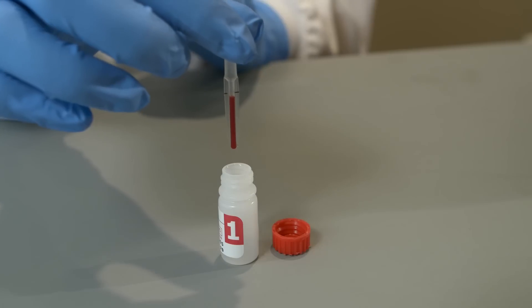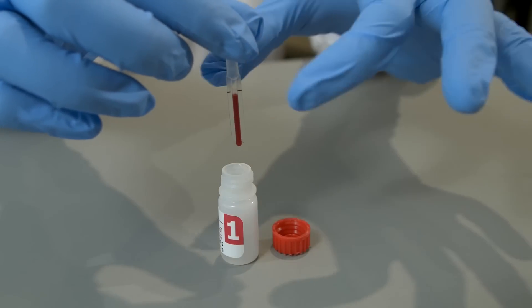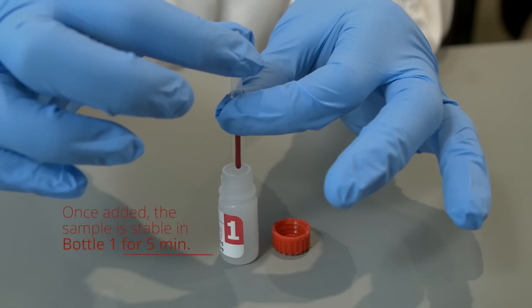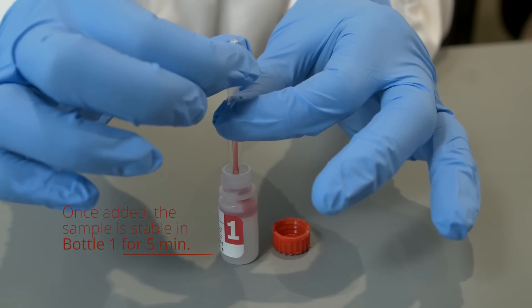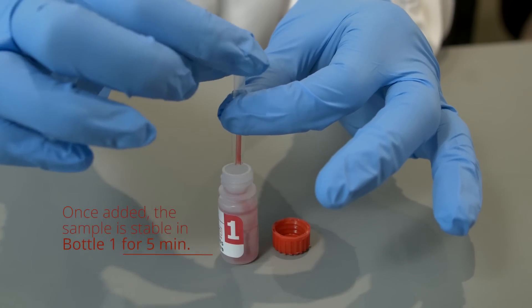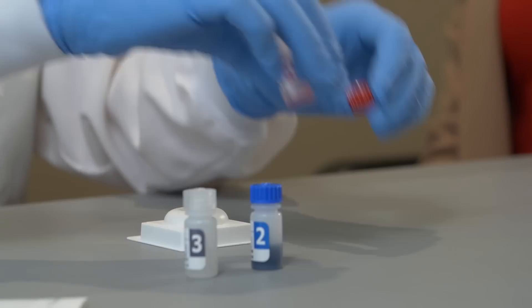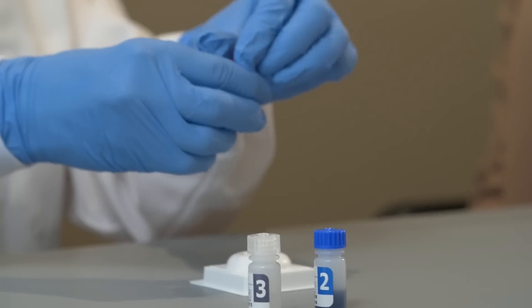However, if squeezing the bulb does not expel the blood sample into bottle number one, cover the pinhole with gloved fingers and squeeze the bulb again. This should release the sample from the pipette stem. Once the sample has been transferred into bottle number one, the sample diluent, recap the bottle and mix well by inversion.